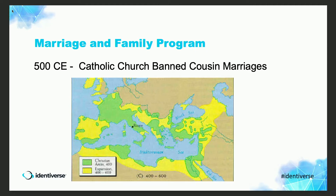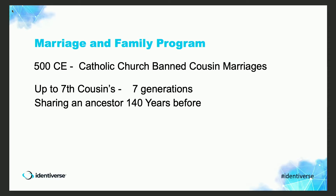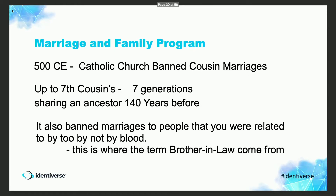The key takeaway is that around the year 500 the Catholic Church imposed a marriage and family program. The map shows the spread of the church — green in 400 AD, yellow 200 years later in 600. It banned cousin marriages up to seventh cousins — meaning sharing an ancestor seven generations above you, about 140 years. They also banned marriages to people related by law rather than blood: if a man married one sister and she died, church law prohibited him from marrying another sister, because they were brother and sister in law — the term 'in-law' comes from church law.